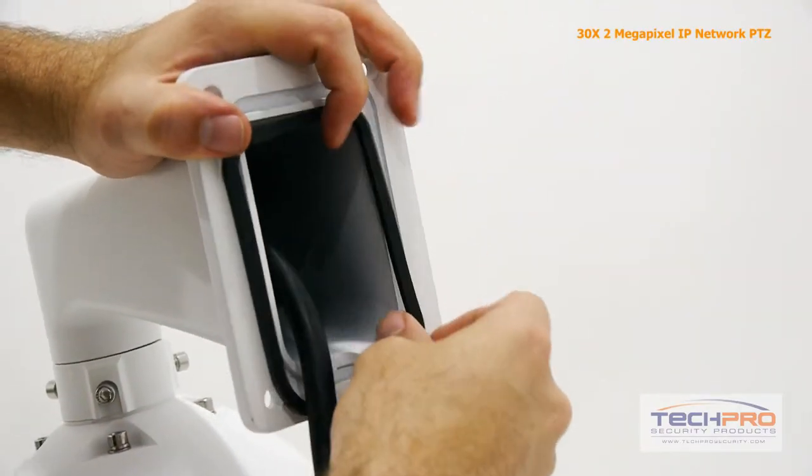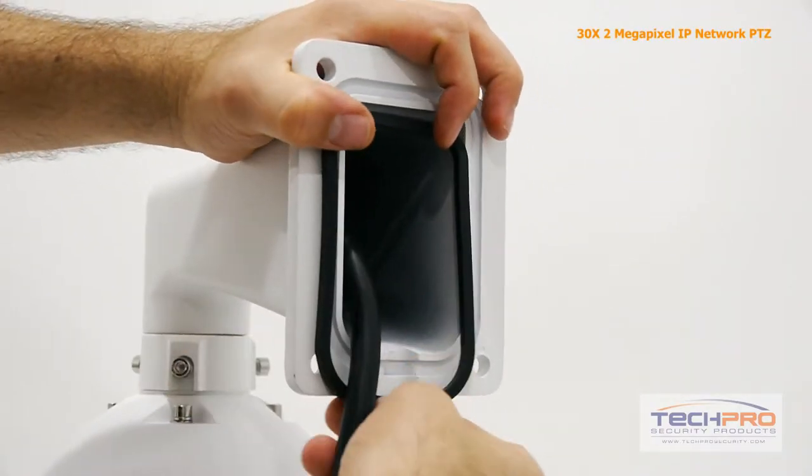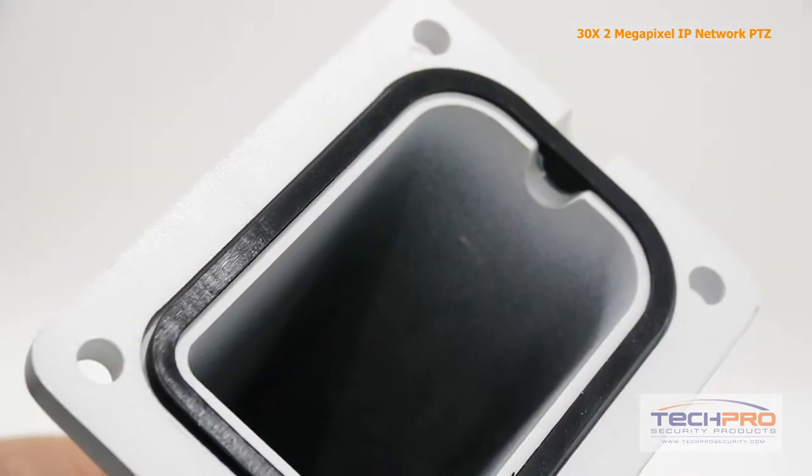Attach the weather seal to the base of the wall mount, making sure that the lip on the bottom of the seal is facing the indention on the lower side of the mount.